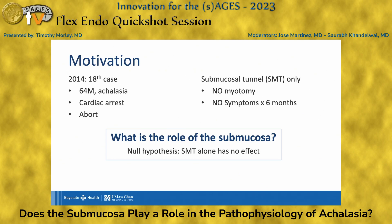this case is actually an early patient — a 64-year-old male with achalasia who had a cardiac arrest during the procedure. This was after the submucosal tunnel had been dissected but before the myotomy had been created. With the help of anesthesia he was resuscitated, and in the six months of follow-up we had him, he had complete resolution of his symptoms.